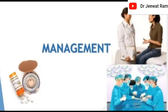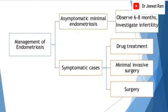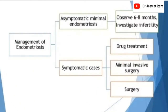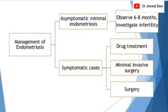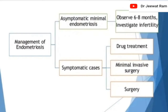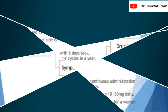Management of endometriosis. This is a chart showing the management of endometriosis. Asymptomatic minimal endometriosis: observe for 6 to 8 months and investigate for infertility. Symptomatic cases are managed with drug treatment, minimally invasive surgery, or surgery.